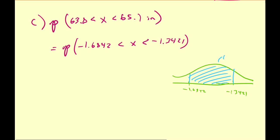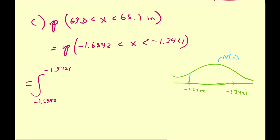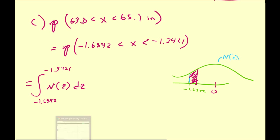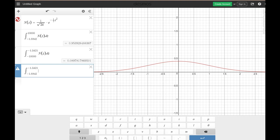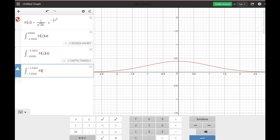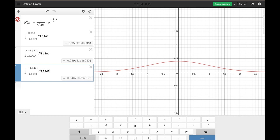I'm just trying to find the area under the curve where the curve is n of z. This area is actually over in the left tail, since both z-scores are negative. This is going to be equal to the integral from negative 1.6842 to negative 1.3421 of the standard normal distribution, n of z dz. And that gives us 0.0437.